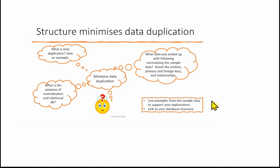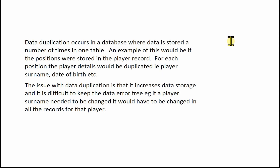Here is a sample paragraph for what is data duplication. Data duplication occurs in a database where data is stored a number of times in one table. An example would be if positions were stored in the player record — for each position, the player details such as surname and date of birth would be duplicated. The issue is that it increases data storage and makes data difficult to keep error free. For example, if a player's surname needed to be changed, it would have to be changed in every record for that player, not just in one place.